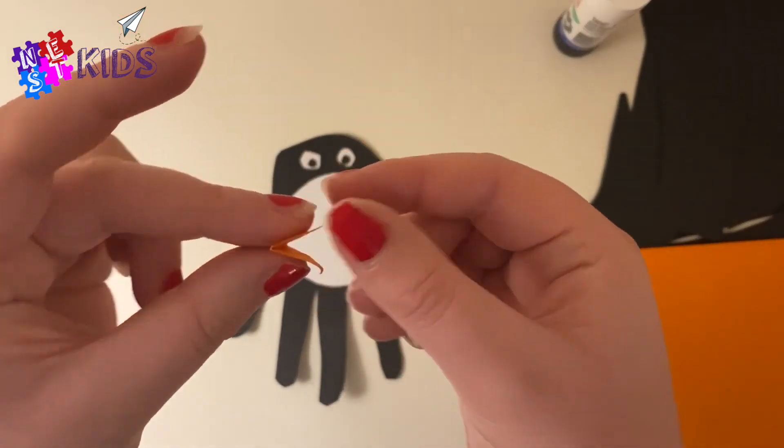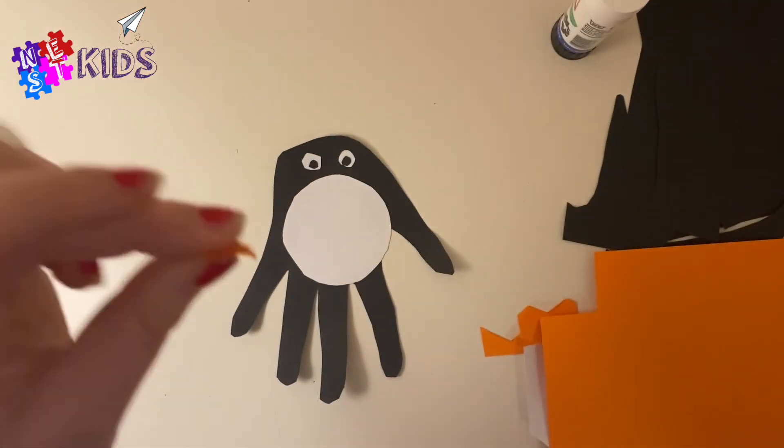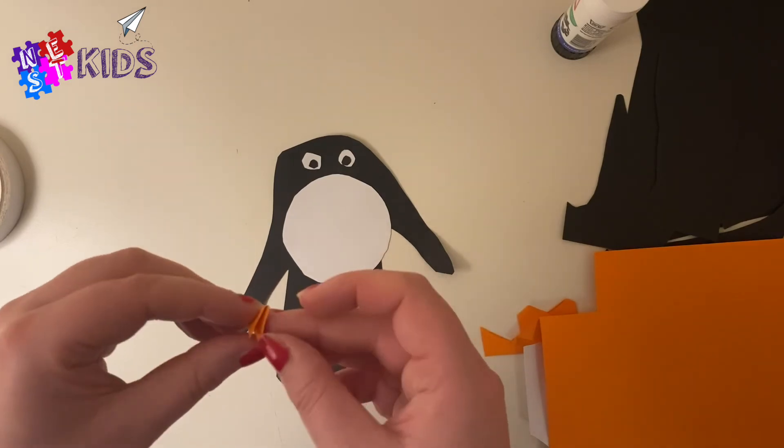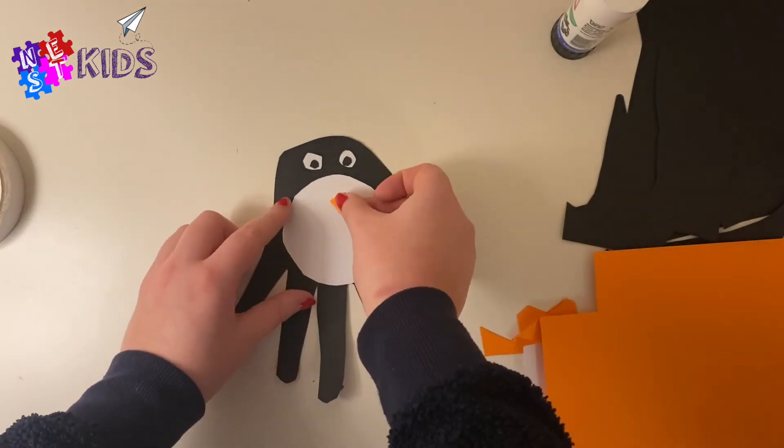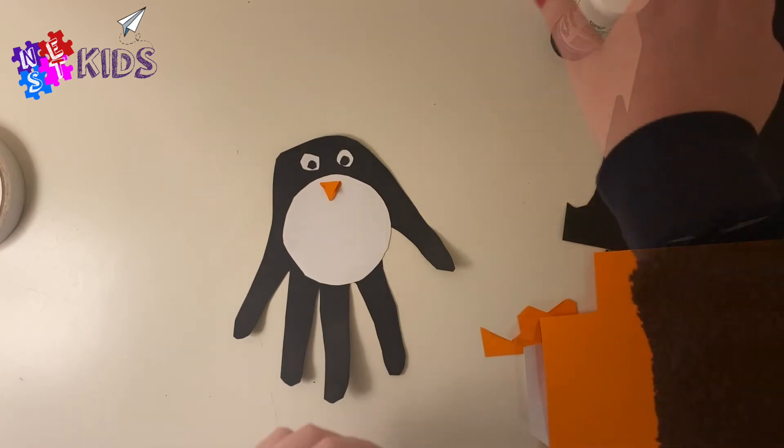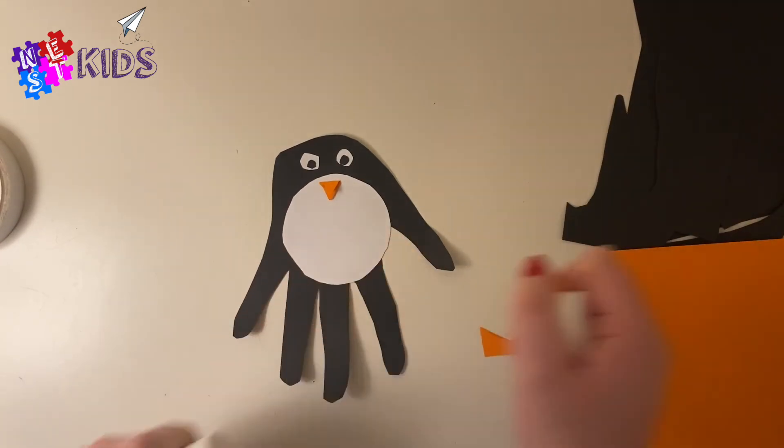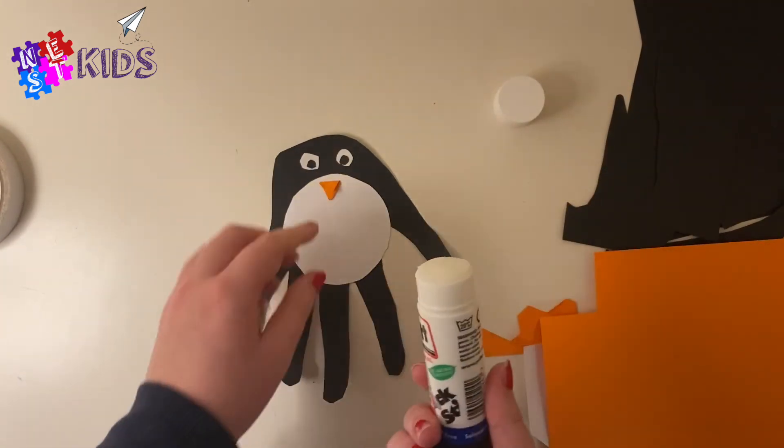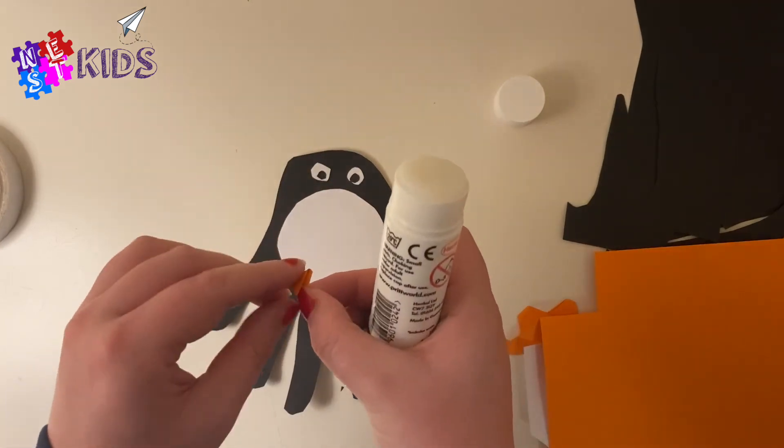You're going to glue one side and stick that down onto your penguin so he has a mouth so he can eat his fish with, like I'm doing here. I've got the glue, and just on that little back bit, that orange beak goes down like so.